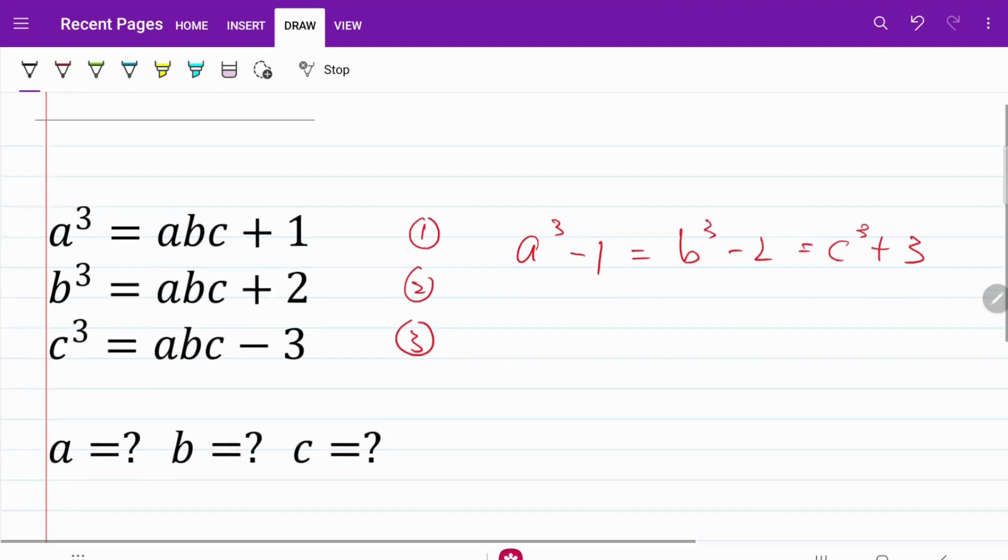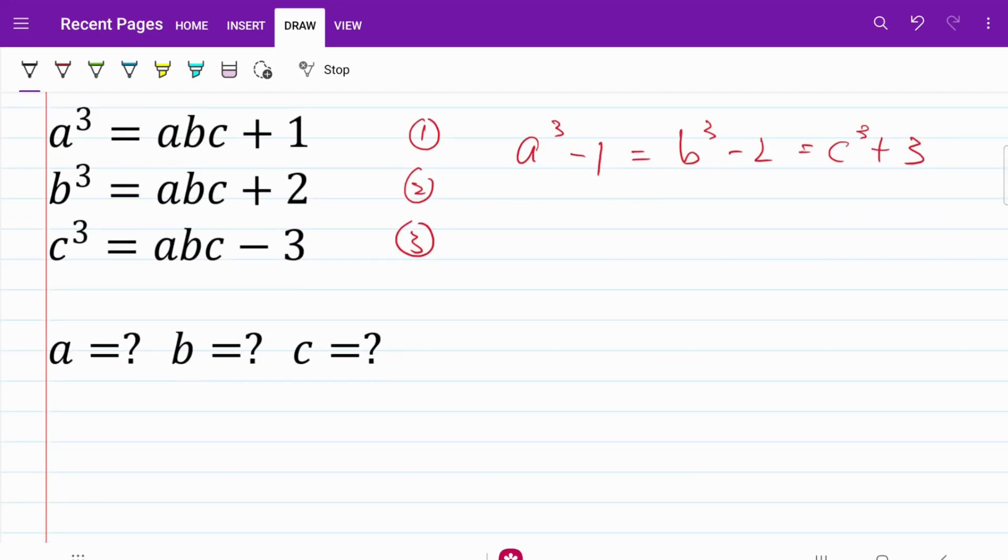If we do that, then on the left hand side, a cube times b cube times c cube, I can express that as abc cube. And on the right hand side, I would actually have abc plus one multiplied by abc plus two multiplied by abc minus three.